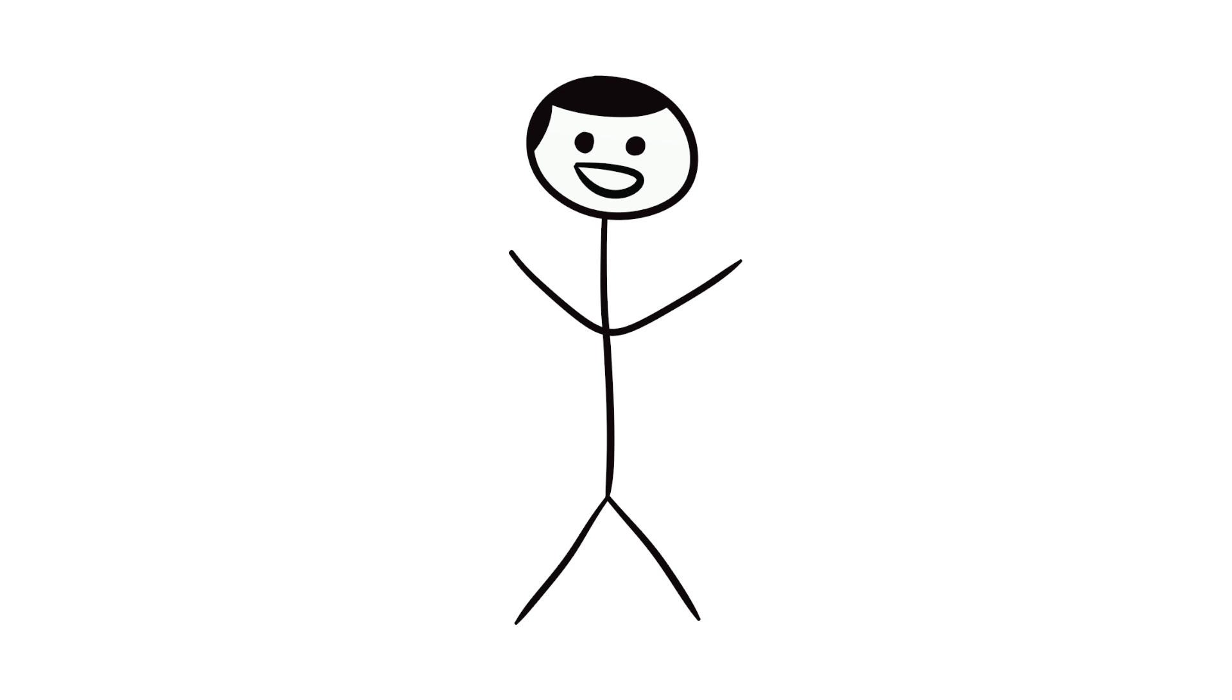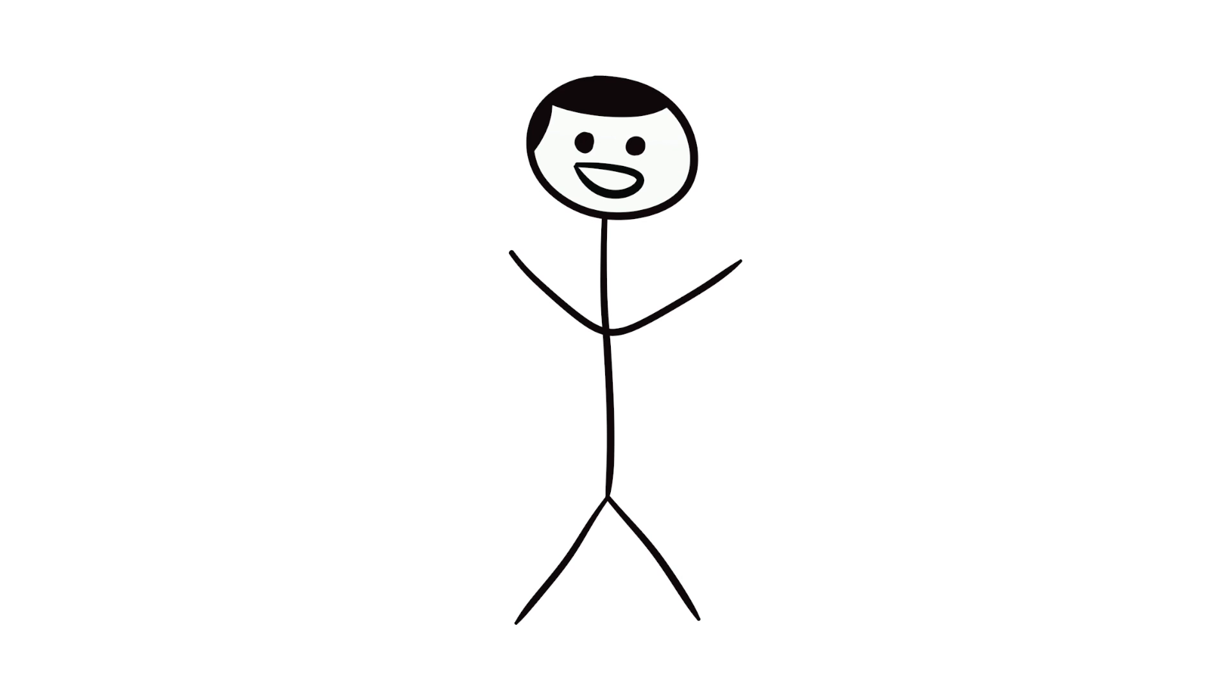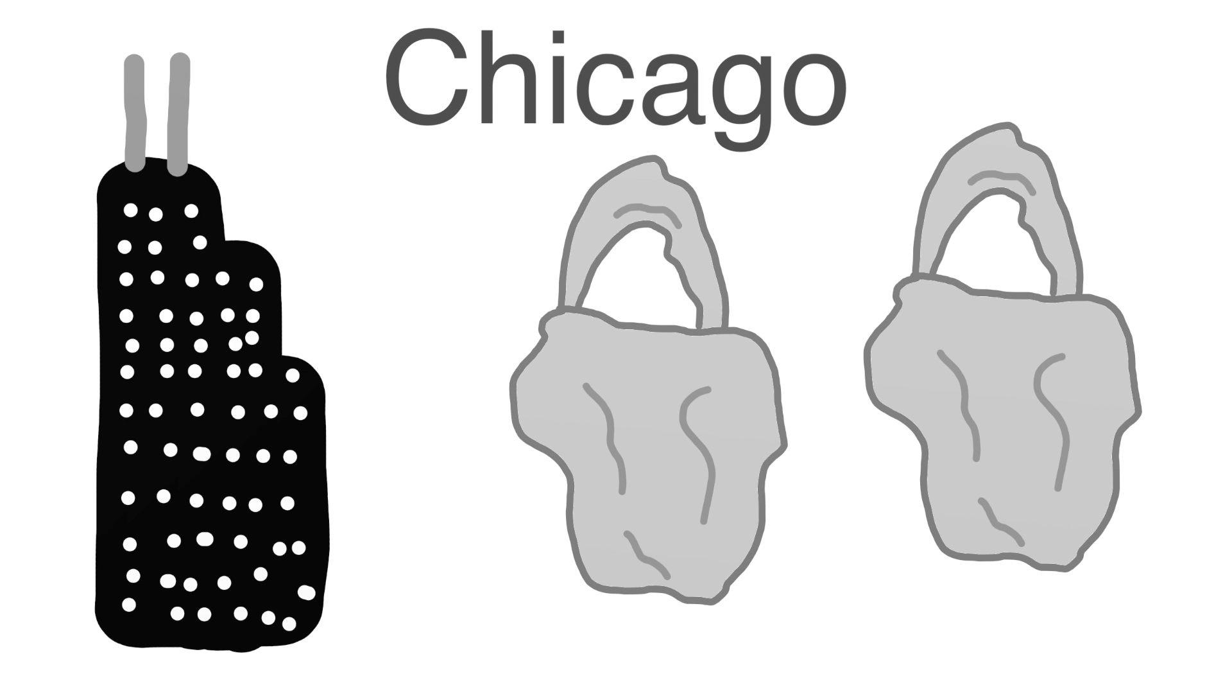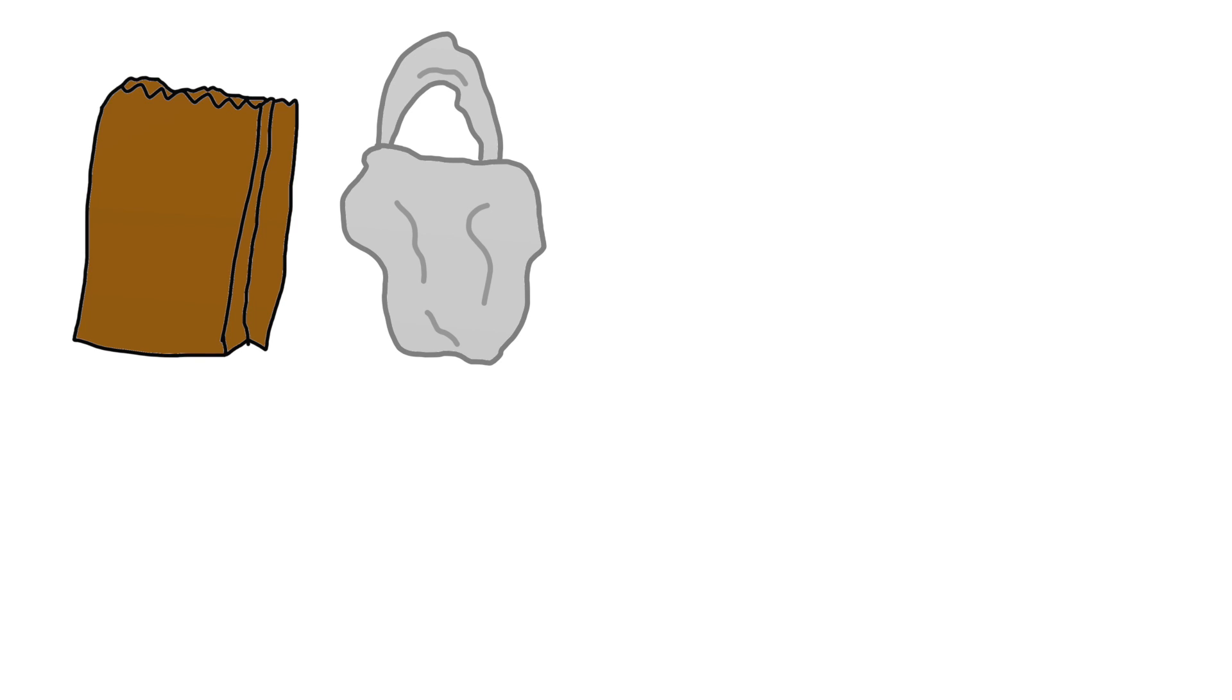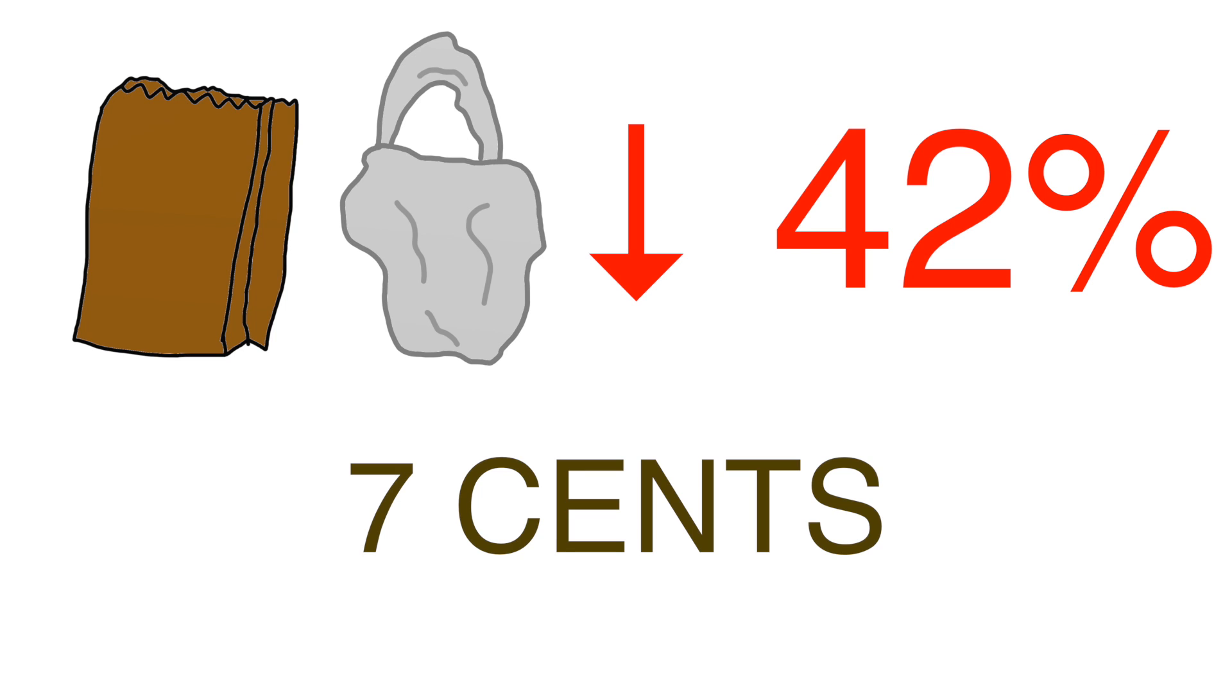Taxes like this have actually already worked in curbing people's behavior. The city of Chicago recently put a tax on plastic bags to lessen consumers' use of them and reduce the bag's impact on the environment. One study found that Chicagoans' use of paper and plastic bags dropped 42% just one month after the rule was instated. And this is only for a small tax of 7 cents a bag.